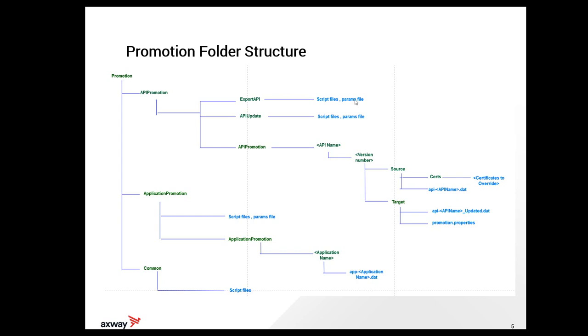The params file is the input for the API export, API update, and application promotion scripts execution. The promotion.properties file is the input for the API manager promote script.